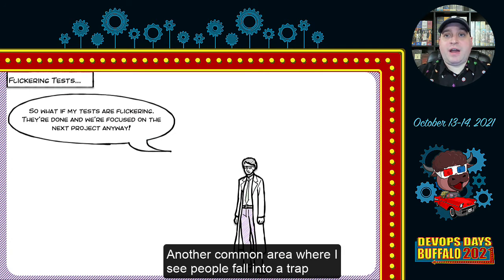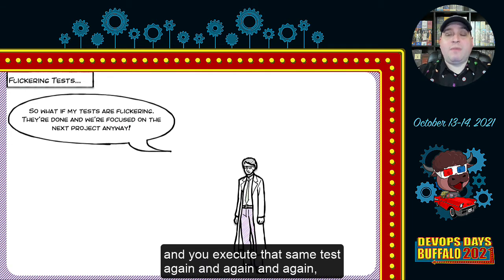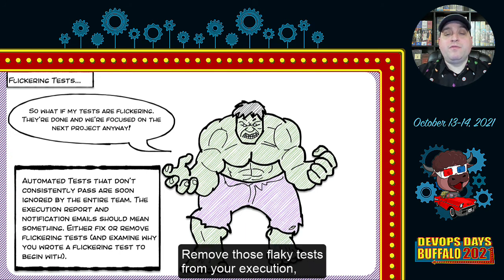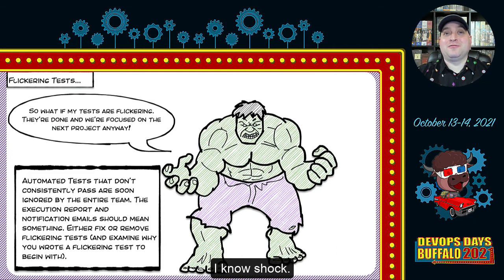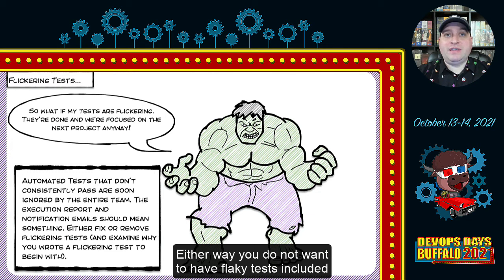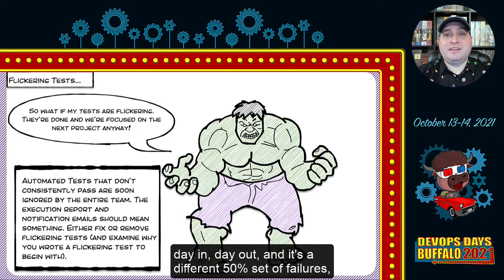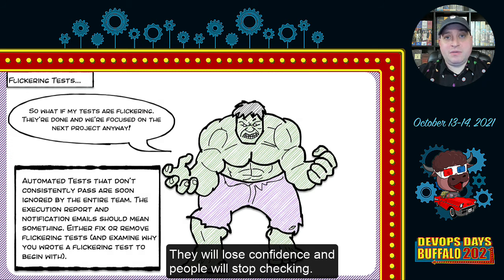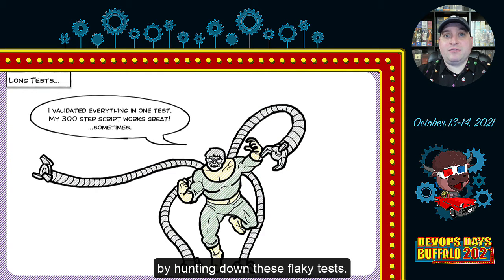Another common trap is flickering or flaky tests — tests that, holding everything else the same, will pass, fail, pass, fail, flickering on and off like a set of Christmas lights. Remove those flaky tests from your execution and investigate why they are flaky. In some cases it's due to your own coding; in others it can be due to data, environment, or an underlying application issue. Either way, you do not want flaky tests in your automation execution — if you're returning a suite with 50% failures day in and day out, people will stop believing in your automation and you'll lose all that investment.